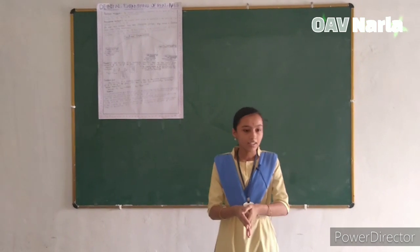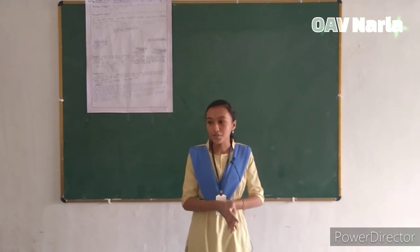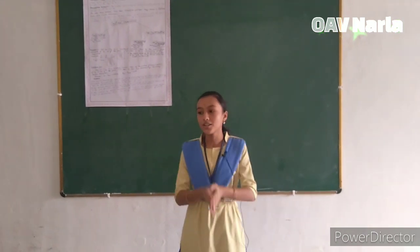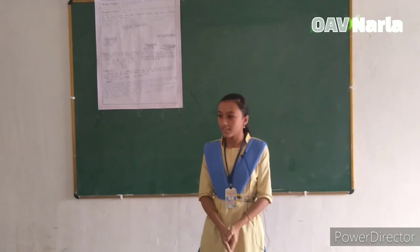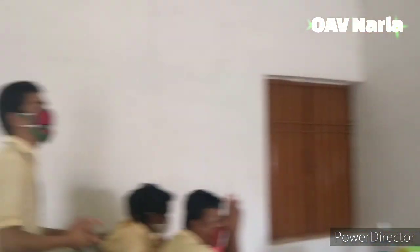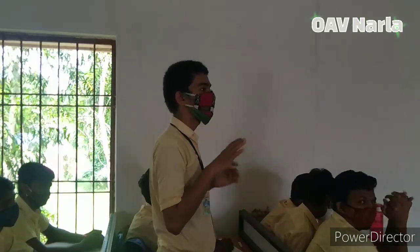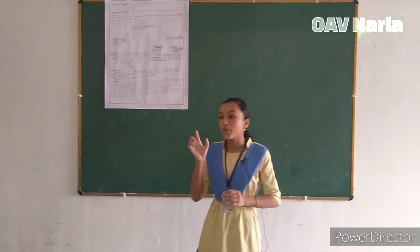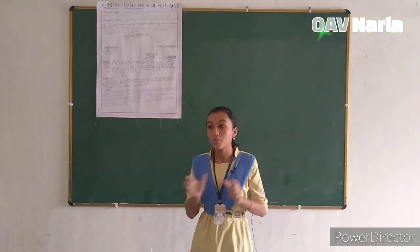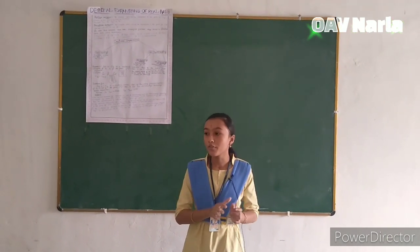Then let me ask you a question: why is pi irrational when 22 by 7 is a rational number? Can any of you answer? 22 by 7 is not the exact value of pi — it is approximately the value of pi. But why is pi an irrational number when 22 by 7 is a rational number? Why do we take 22 by 7 as the value of pi?